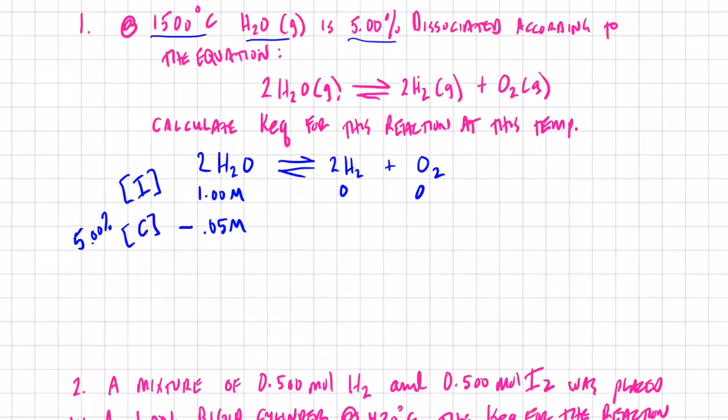Now remember, if we know what happens to one substance in a balanced equation, we can figure out what happens to everything in that balanced equation. For instance, if my water vapor goes down by 0.05 molar, this product, hydrogen gas,